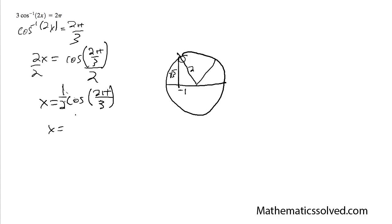So simply this is going to be one half times negative one half, which is equal to negative one fourth. And that's our solution. This is your solution.